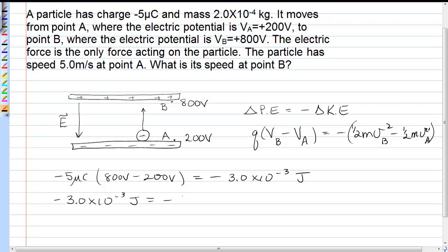So that would be equal to negative one-half m—I'm just going to factor that out—Vb squared minus five meters per second squared. The whole five meters per second is squared.